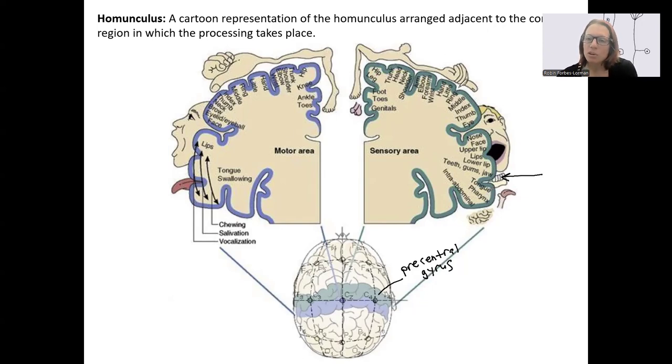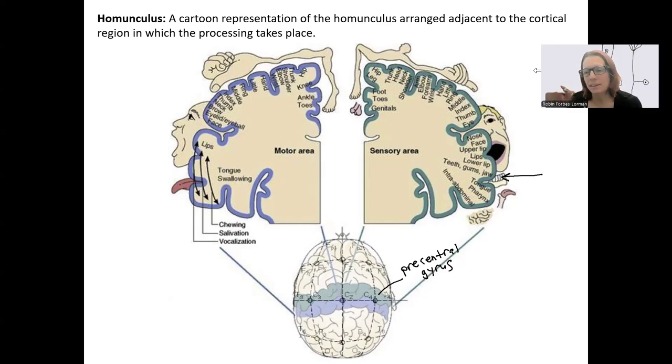Certain parts of the body may have more cortex devoted to them because we need to have more sensation and motor control over places like the hands and lips compared to the calf and back. This is called the sensory homunculus, which means little man because there's like a little man represented in our cortex.